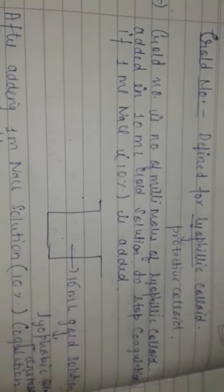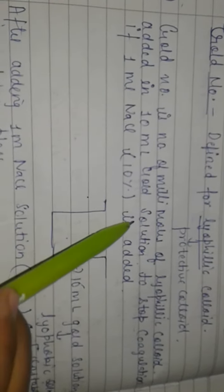Hello everyone, in this video I am coming with a new topic that is gold number of chapter surface chemistry. So gold number is defined for lyophilic colloid. Lyophilic colloid is also called protective colloid. So gold number is a number...